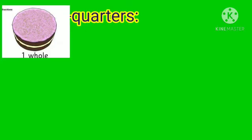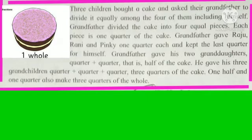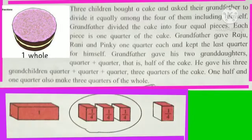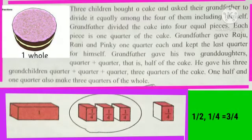Next, three quarters. Three children bought a cake and asked their grandfather to divide it equally among the four of them, including himself. Grandfather divided the cake into four equal pieces. Each piece is one quarter of the cake. Grandfather gave Raju, Rani and Pinky one quarter each and kept the last quarter for himself. Grandfather gave his two granddaughters quarter plus quarter, that is half of the cake. He gave his three grandchildren quarter plus quarter plus quarter, that is three quarters of the cake.